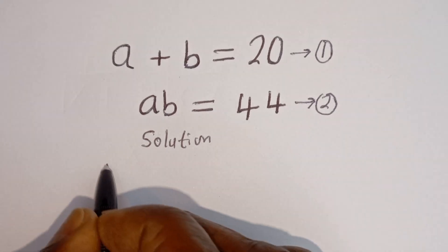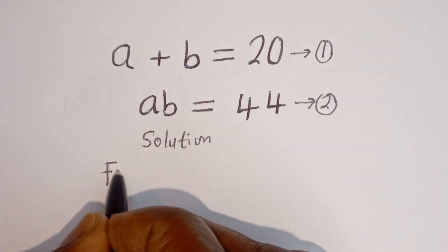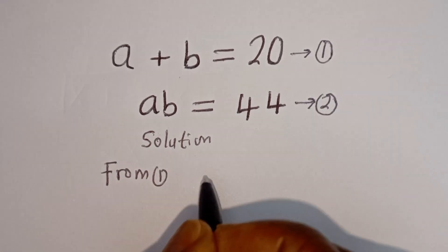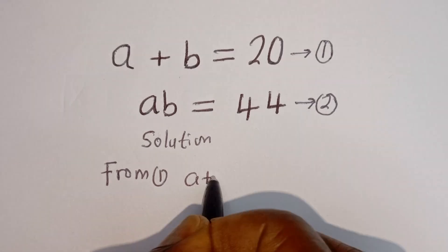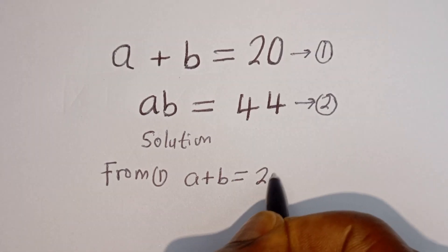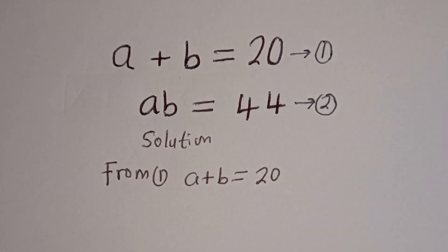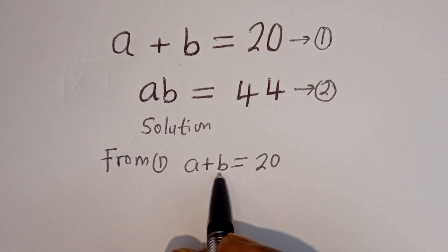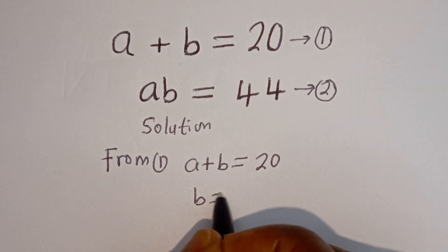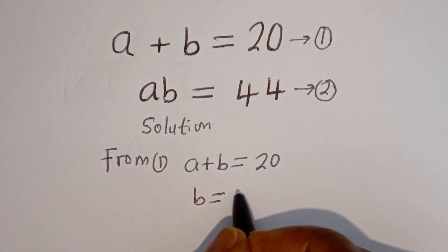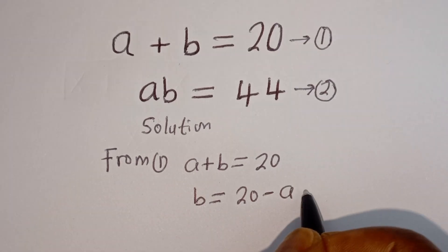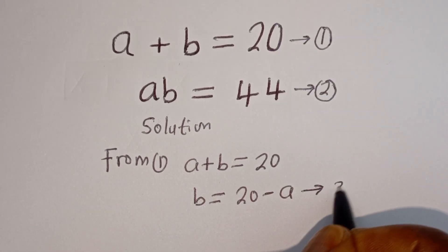Then from equation 1, a plus b is equal to 20. Let's make b the subject of the formula: b is equal to 20 minus a. Let's call this equation 3.